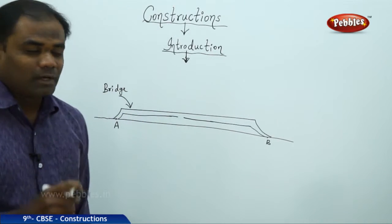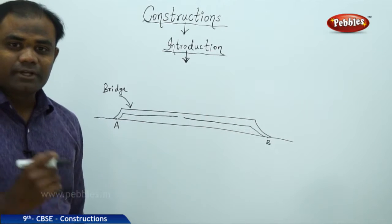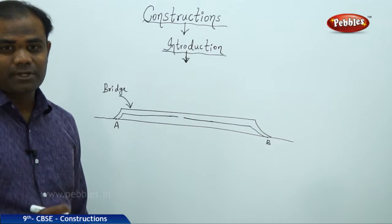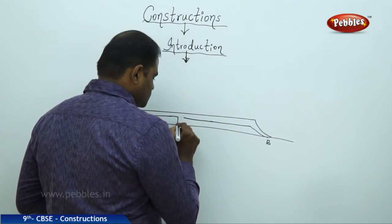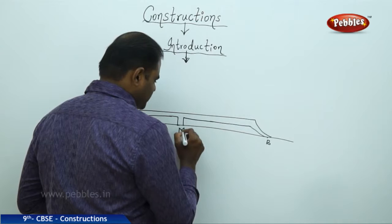Therefore, an engineer while constructing this new bridge is very cautious about using constructions. So here he takes the line AB and tries to measure the midpoint, which is at this point.